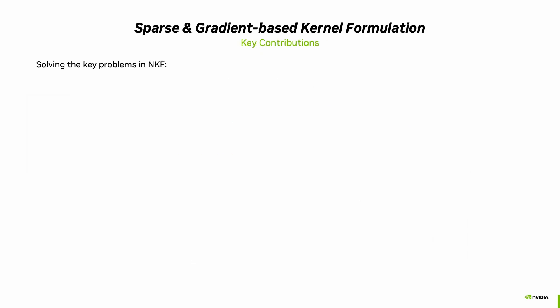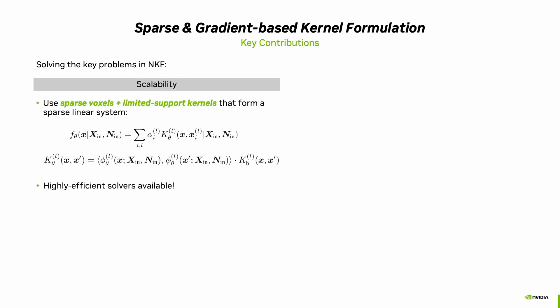Our key contributions address both main problems of NKF. First, to improve scalability, instead of a dense kernel with support over the entire domain, we build sparse voxels and modulate the kernel basis functions with a Bezier mask function defined over the voxels, as shown here in the top right figure. We use a simplest form of data-dependent kernel defined by the dot product of the learned features at x and x prime, as shown in the k_theta equation. This dot product formulation allows for greater flexibility in the shape of the kernel basis function.